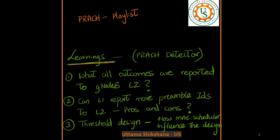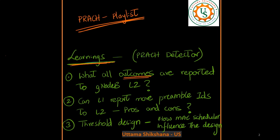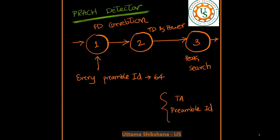Hey guys, welcome back. This video goes under the playlist of PRACH. The main learnings from this video are: from the PRACH detector, I will talk about the outcomes, then I will talk about whether L1 can report more preamble IDs to L2 or not, if it is possible then what are the pros and cons, and then we'll talk about how the MAC scheduler can influence the design of this threshold value.